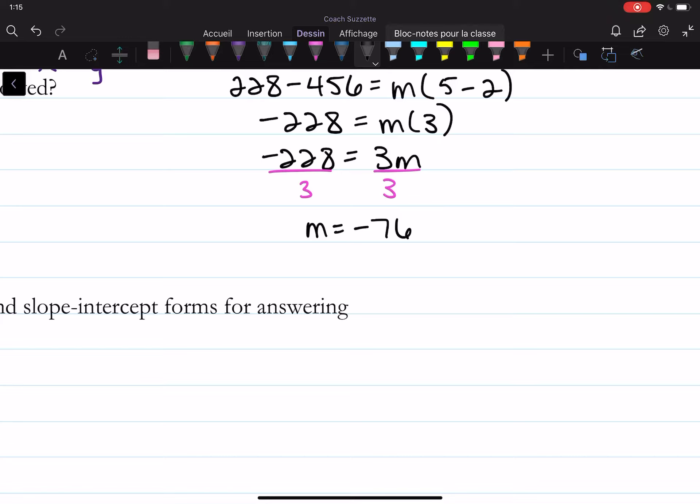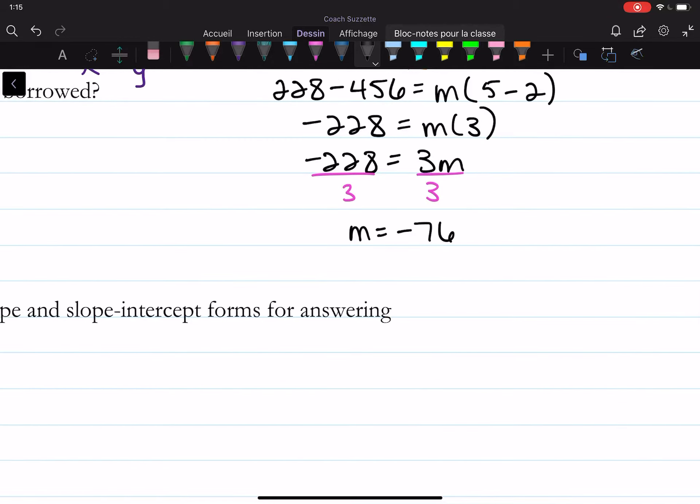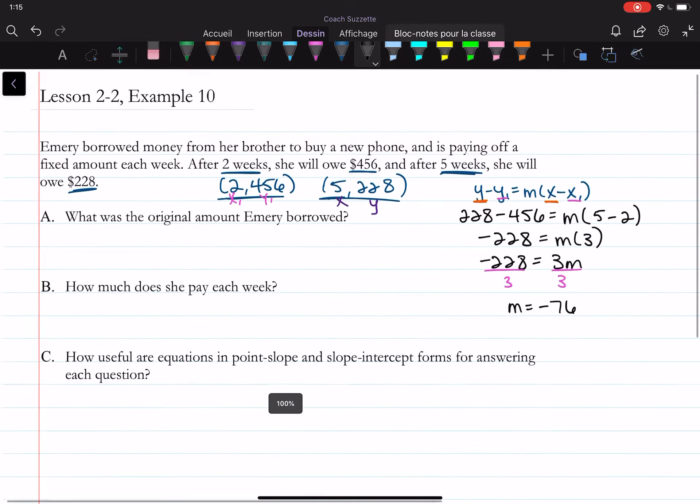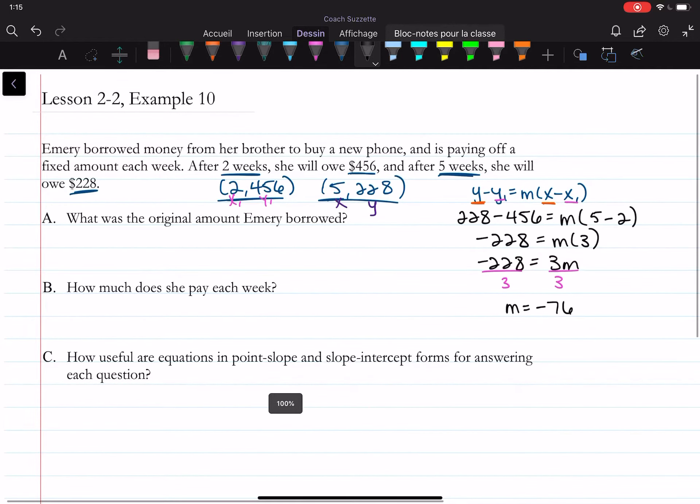So we know our slope, it's negative 76. In the context of this problem, that means her balance is going down by $76 every week. She's making a payment every week. But how does that now help us find the original amount, which was the y-intercept?